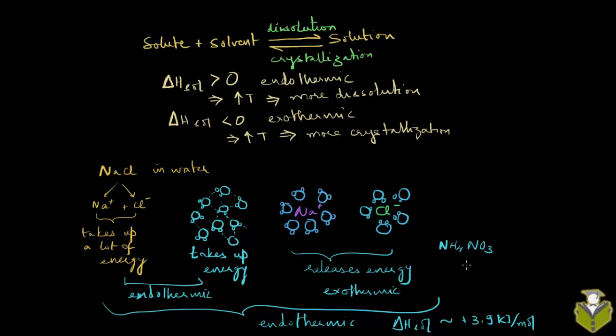It so happens that the enthalpy of solution, delta H solution for ammonium nitrate is really high, positively really high. It's a highly endothermic dissolution process. So, delta H solution is about 25 kilojoules per mole.